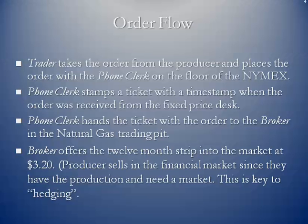The phone clerk stamps the ticket with the time the order was received from the fixed price desk, then hands the ticket to their broker in the natural gas trading pit. The broker offers the 12-month strip price into the market at $3.20. The producer sells in the financial market since they have the production and they need a market — this is a key to hedging. The producer has the natural gas, so what they need from the NYMEX is a price and a market for it.